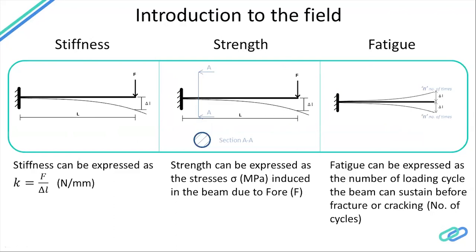Your product should not deform beyond a particular target. Secondly, strength can be expressed in terms of stresses — your product should sometimes sustain a particular stress level, and when we have such targets it is a strength analysis. When the same beam is subjected to multiple loadings, as you can see in the diagram, and you need the beam to sustain a number of cyclic loadings, that is the fatigue part of it.